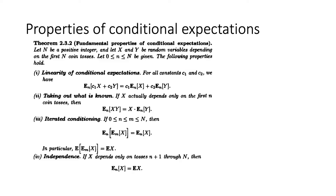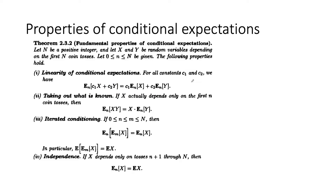Let's go to some of the fundamental properties of conditional expectations. One of them is linearity, which is a very basic property of expectation. If C1 and C2 are constants and we have two random variables, then to find the expectation of that expression, we can just take C1 out and C2 out and have these two expectations each on their own. I don't think there's much explanation needed here.